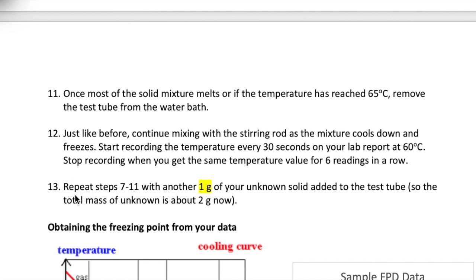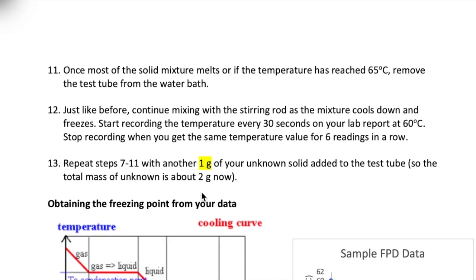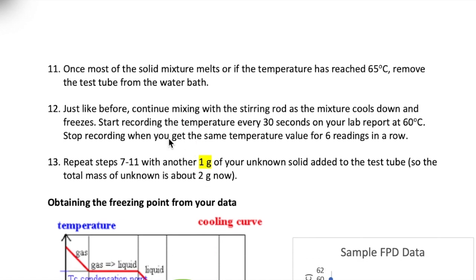You're going to repeat this step one more time by adding another gram of your solid to the mixture that you have in the test tube. Again, this is a change from the procedure because they ask you to use two grams, so we're going to use one gram instead. So you're going to again melt the mixture, then cool it down, and start measuring the temperature now at 58 degrees Celsius. And again, do that for 30 second increments until the readings are constant.